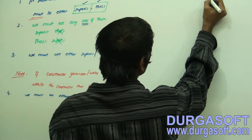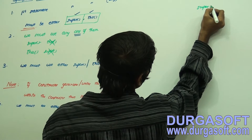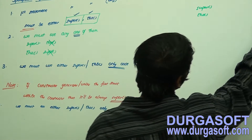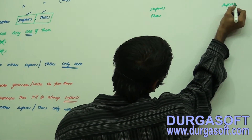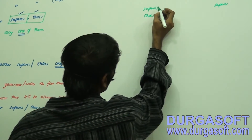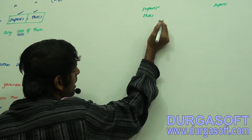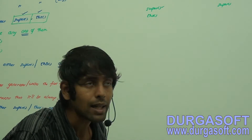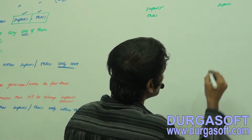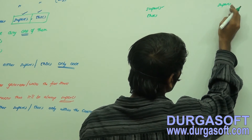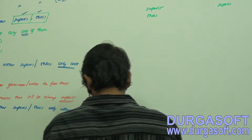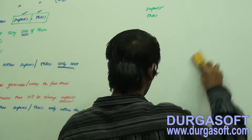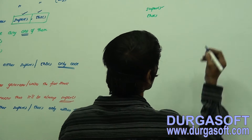What is super() — it is a call to the no-argument constructor of the parent class. What is this() — it is a call to the no-argument constructor of the current class. And what is super here — it is a keyword.